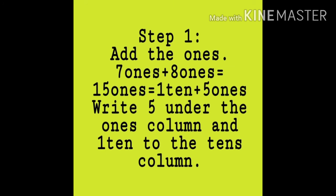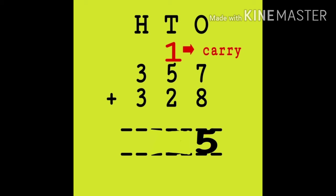Now let's see step number 1: add the ones. 7 ones plus 8 ones equals to 15 ones. We have seen that 15 ones can be written as 1 ten plus 5 ones. So we will write 5 under the ones column and carry 1 ten over to the tens column. 7 plus 8 equals 15, so 5 is written under the ones place and 1 is carried over to the tens place.